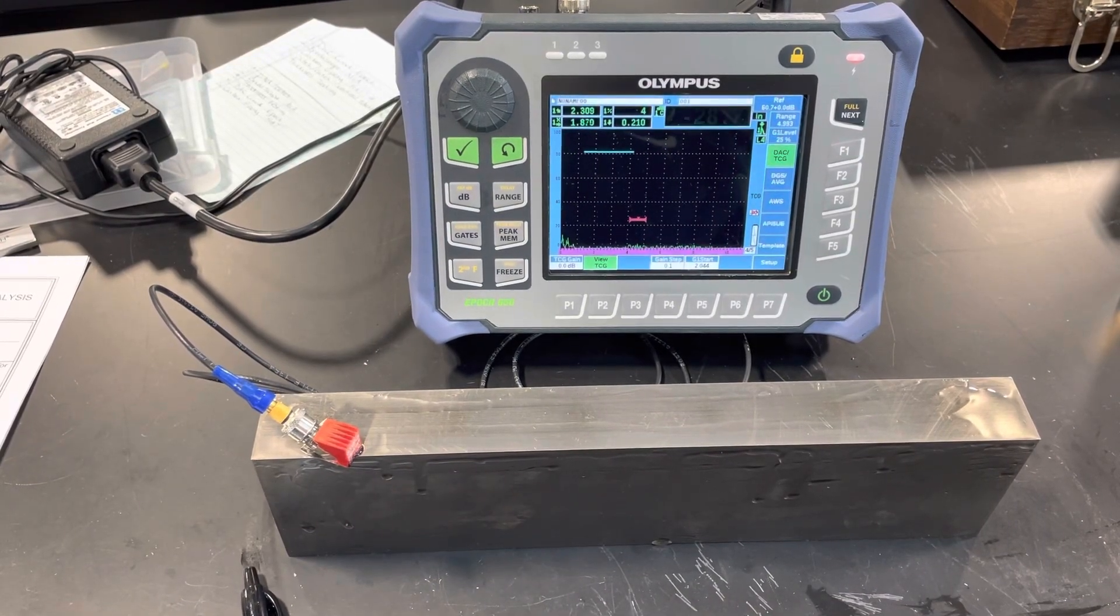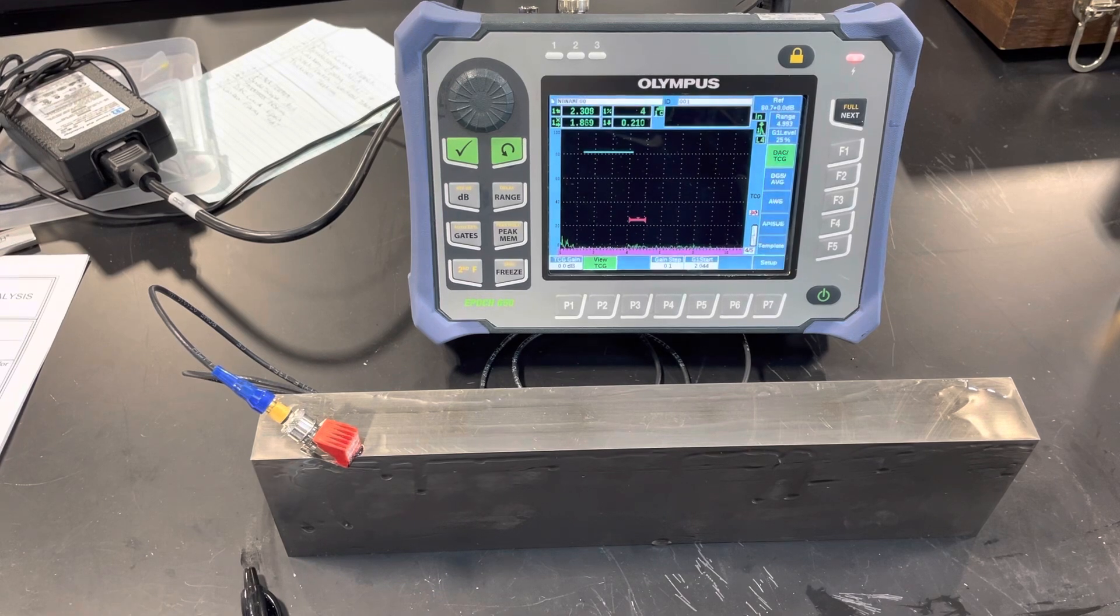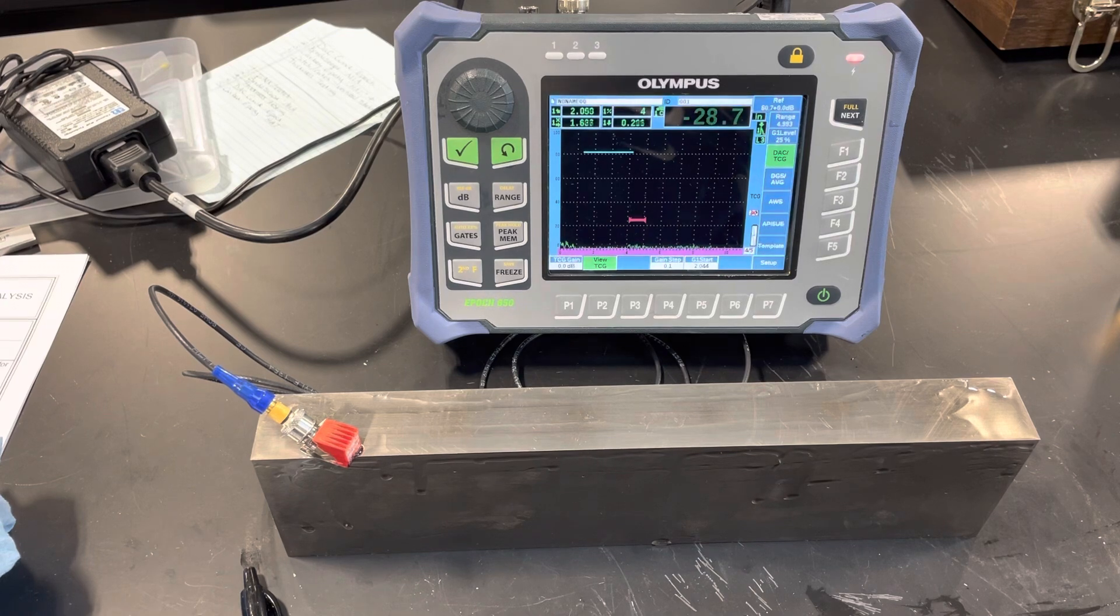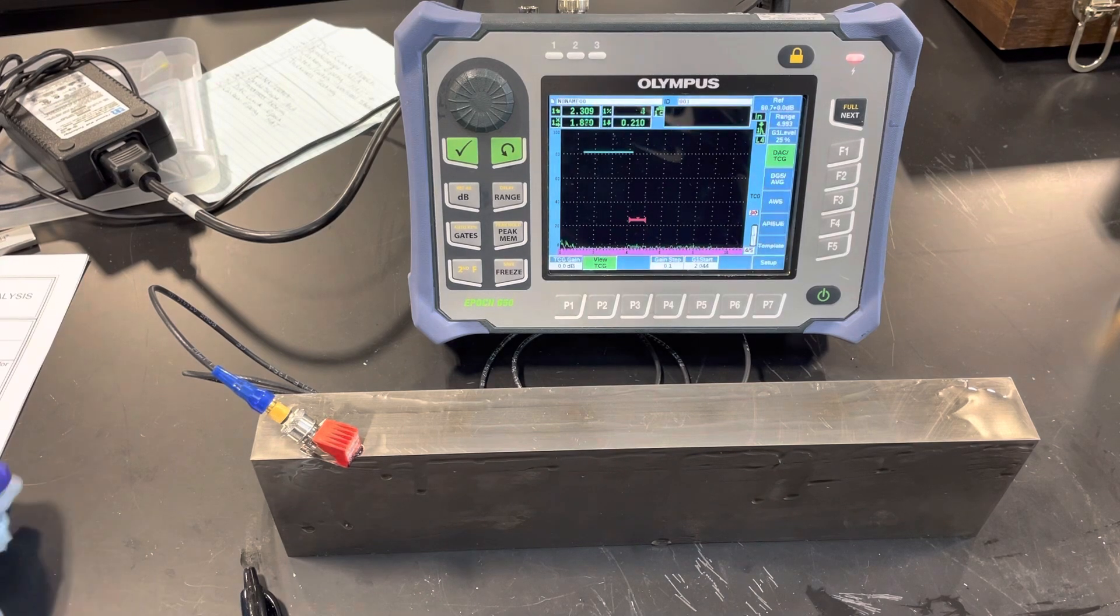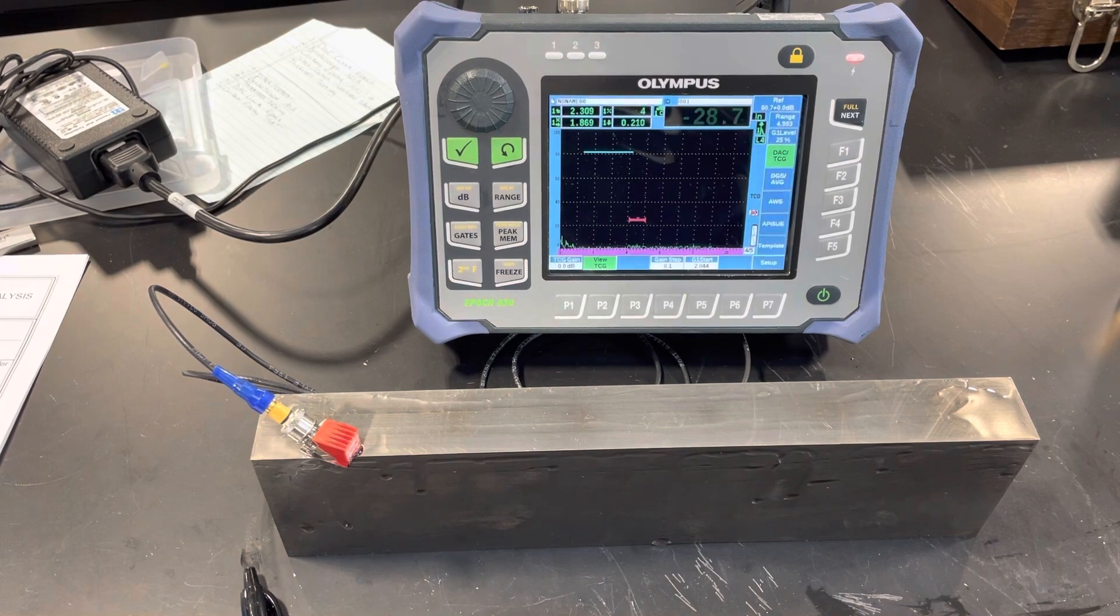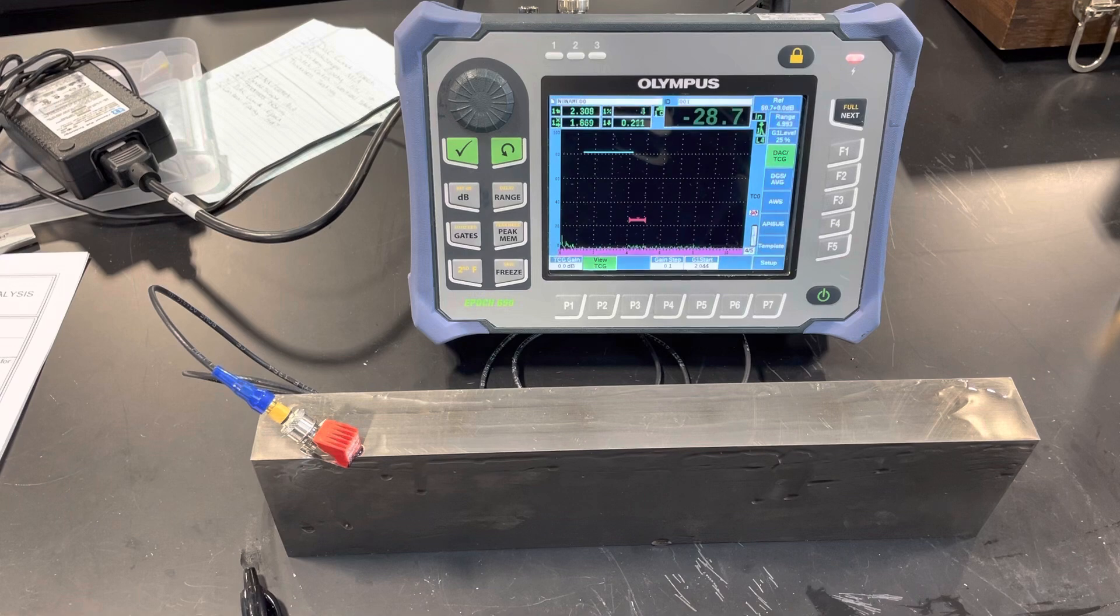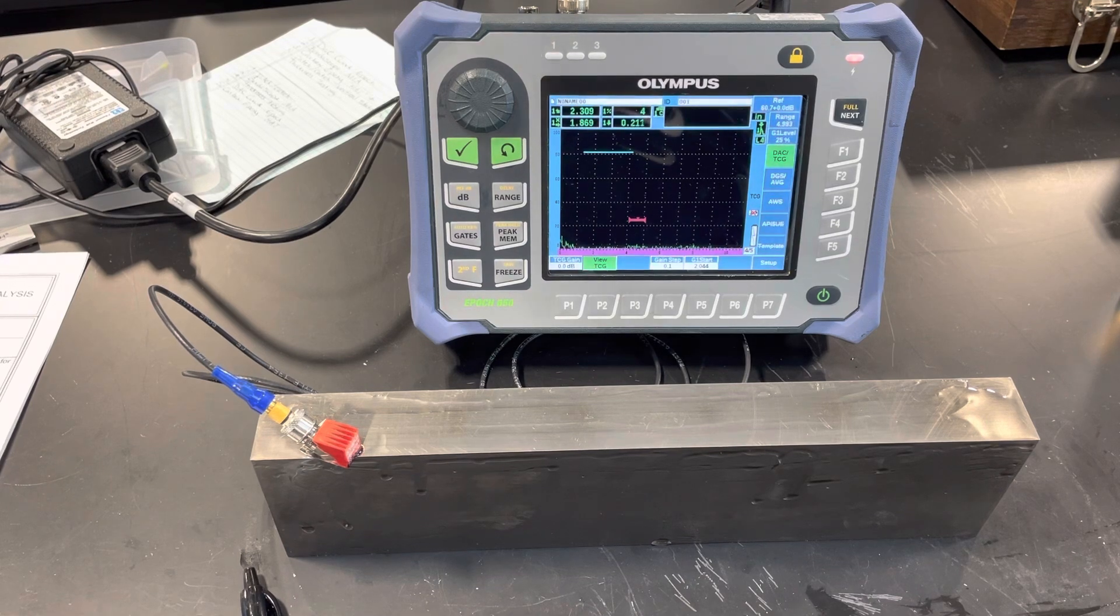Right here doing that DAC curve inspection - that's DAC, Distance Amplitude Curve. Basically what we got here is a way where we can find reflectors of the same size but at different distances from the transducer.